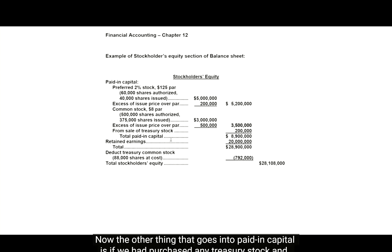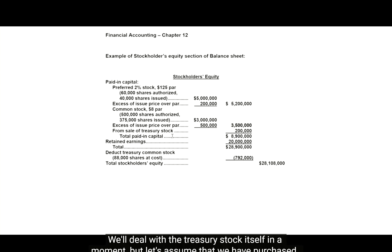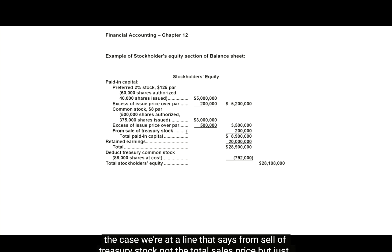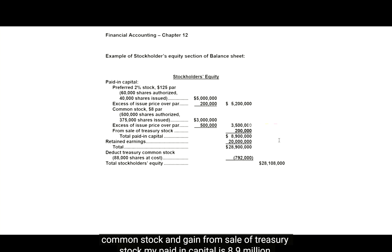Now the other thing that goes into paid-in capital is if we had purchased any treasury stock and then we sold it at a gain — we would put just the amount of the gain from that sale in this section. We'll deal with the treasury stock itself in a moment. But let's assume that we have purchased some treasury stock and we resold it for $200,000 more than what we paid for it. So we have a line that says 'from sale of treasury stock' — not the total sales price, but just the amount above what we paid for it — so a gain of $200,000. When I add the preferred stock, common stock, and gain from sale of treasury stock, my paid-in capital is $8.9 million.